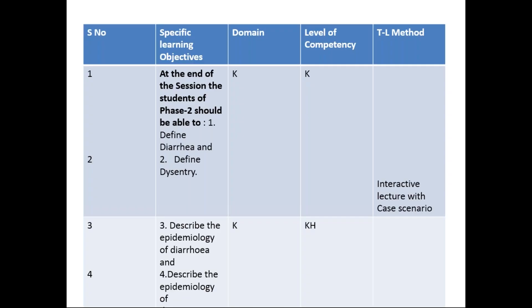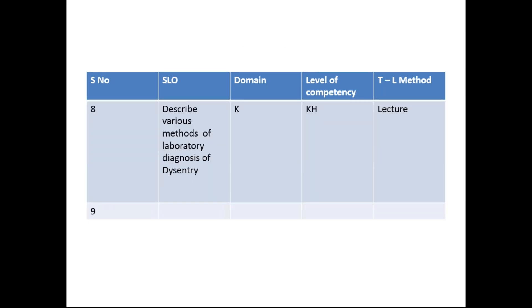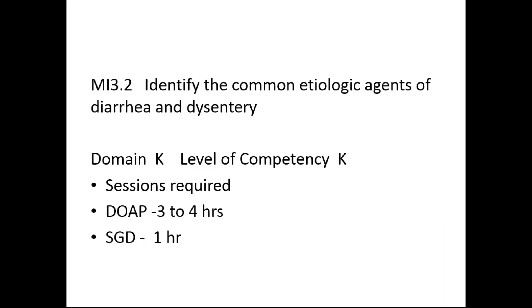Coming to the specific learning objectives: at the end of the session, the students of phase two should be able to define diarrhea and dysentery, describe the epidemiology of diarrhea and dysentery, describe the various diagnostic tests and interpretations with relation to duration of illness, and describe the various methods of lab diagnosis of dysentery. Coming to the next competency: identify the common etiological agents of diarrhea and dysentery. Sessions required are three to four hours small group discussion, one hour. Level of competency is know, and domain is knowledge domain.